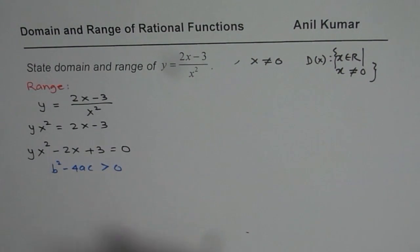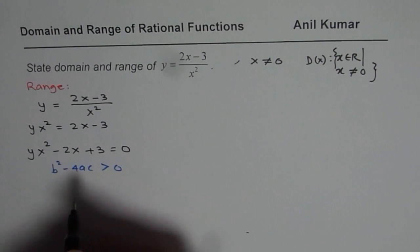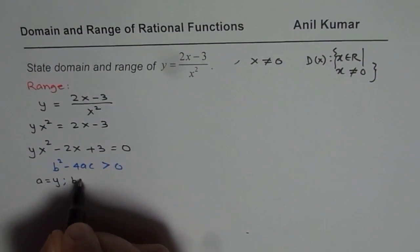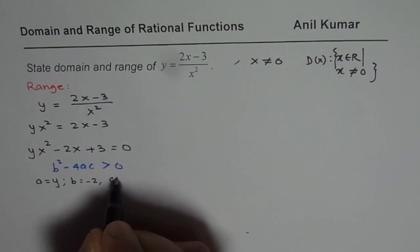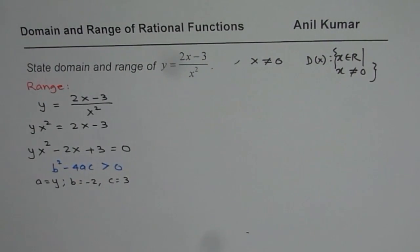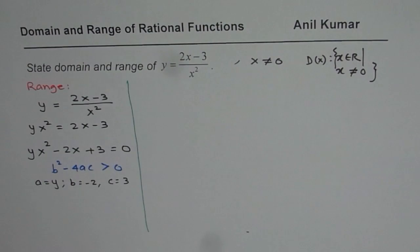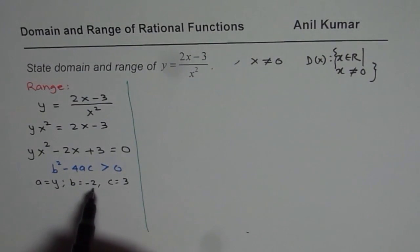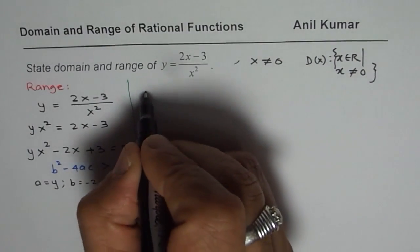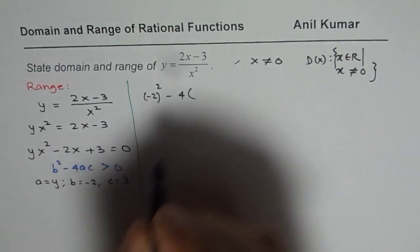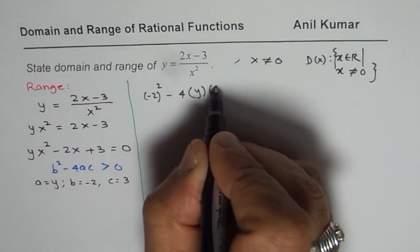Now here a equals y if you compare, b equals minus 2, and c equals 3. So we will solve for b² minus 4ac. We have b² minus 4ac, that means (-2)² minus 4 times a, which is y, and c is 3.